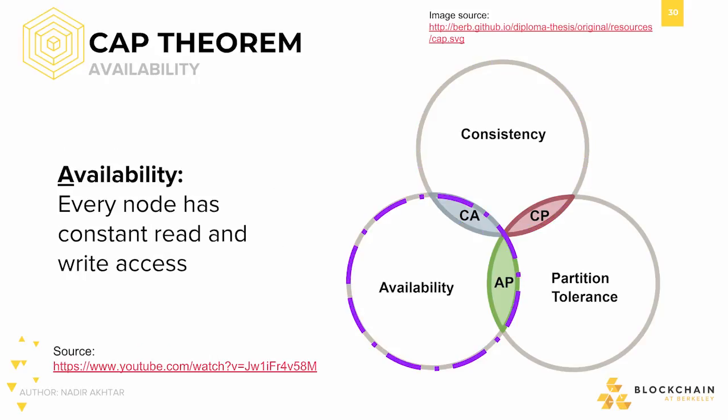The A in CAP stands for availability. Availability in a system means that every node has constant read and write access. In other words, an available system allows you to make updates and retrieve the state of the system without delay. This is born from liveness. Availability promises what must happen, which is the ability to read or write some state.